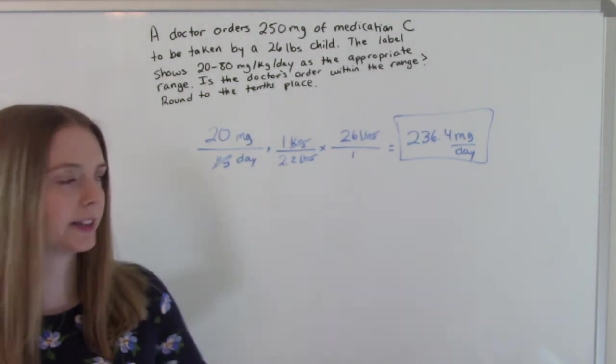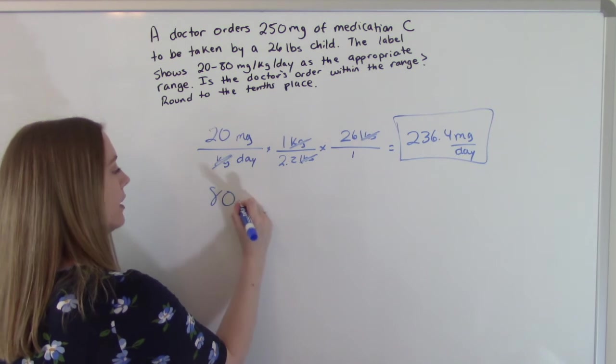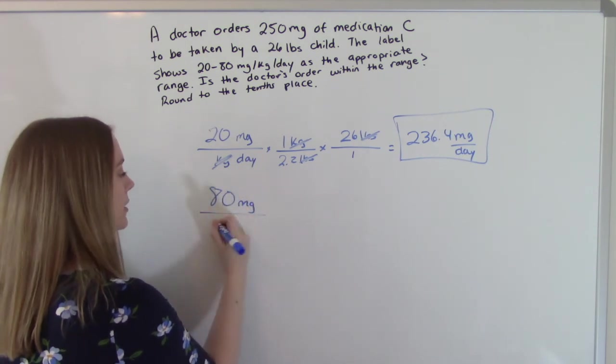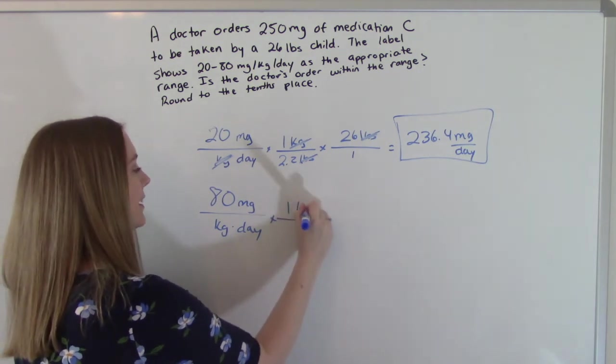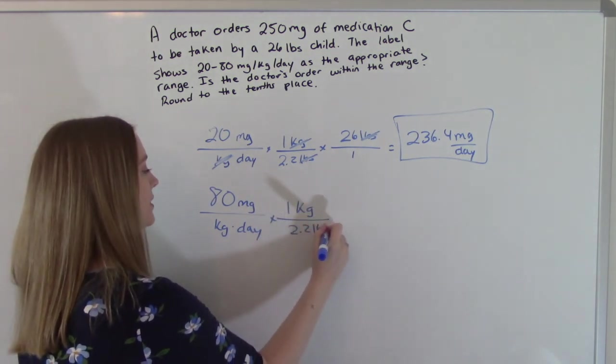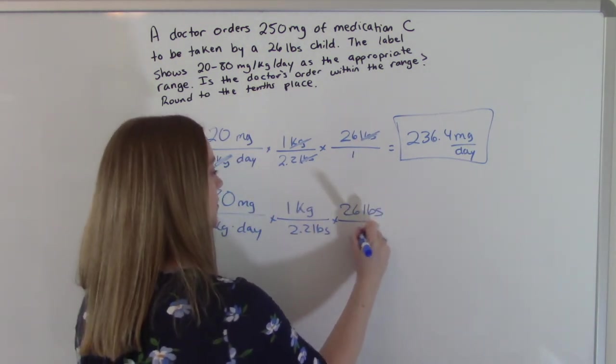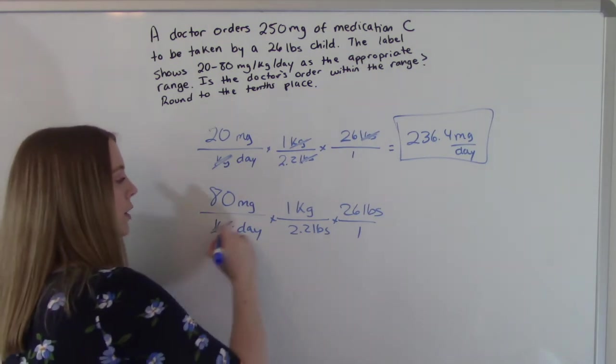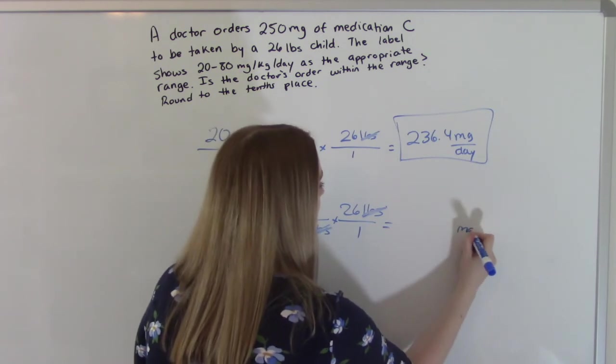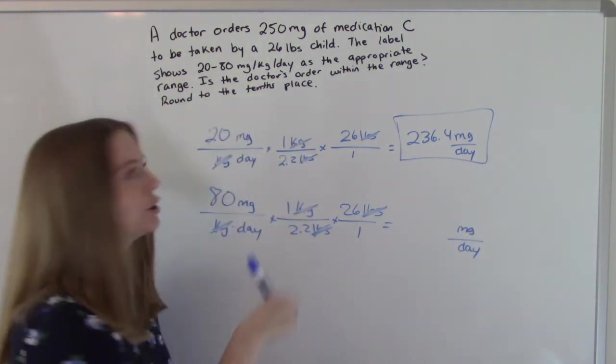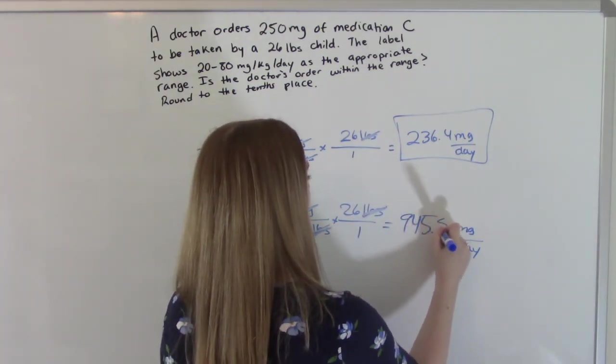Now let's do our highest range. To do that, we're going to take our 80, or we're going to set it up the exact same way. So 80 milligrams per kilogram per day. One kilogram is 2.2 pounds. And then our child weighs 26 pounds. So our kilograms will cancel. Our pounds will cancel. This will leave us with milligrams per day. Punch it in, do the math. And it's 945.5.